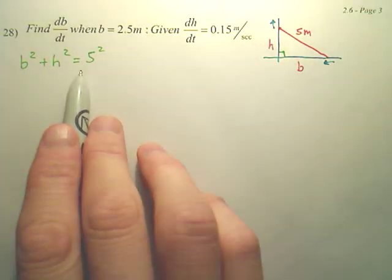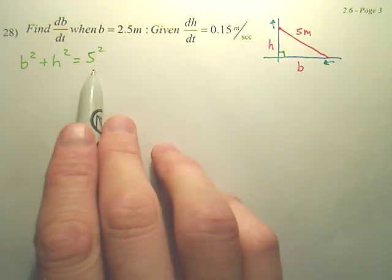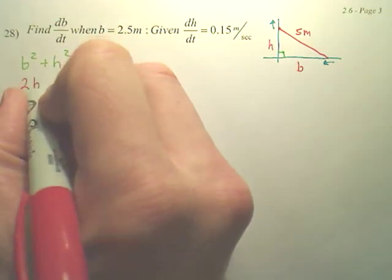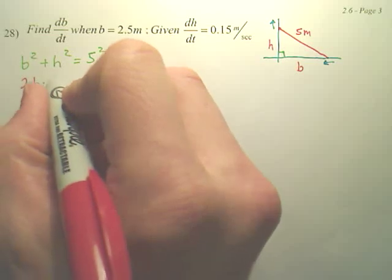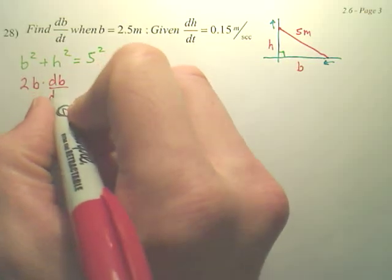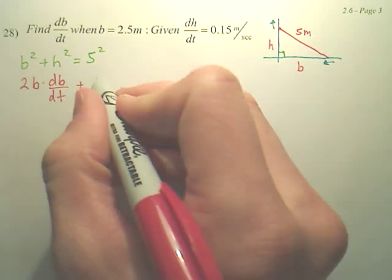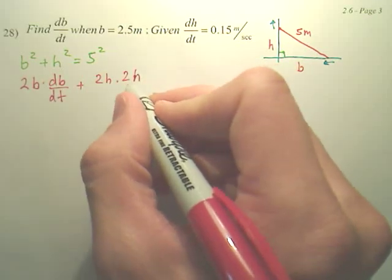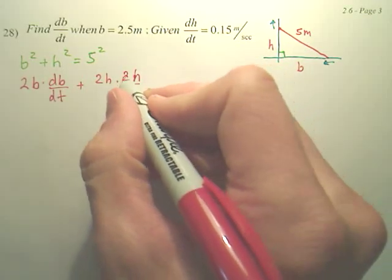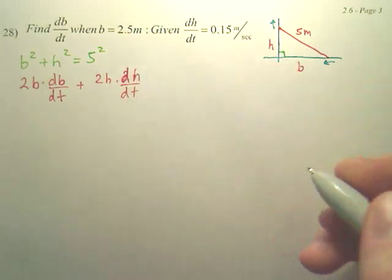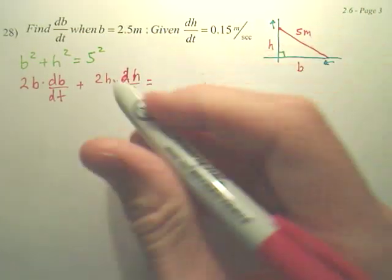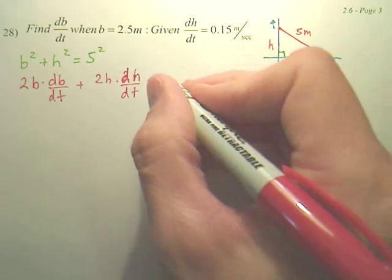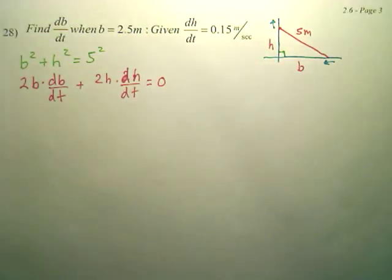This is our original equation. Let's derive it because we're looking for db/dt. When we derive this, we first get 2b times db/dt plus 2h times dh/dt equals, what's the derivative of 25? It's 0.